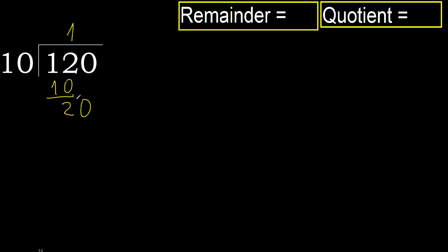Next, 20. Multiply by 2 is 20, it is not greater. Subtract: 20 minus 20 equals 0.